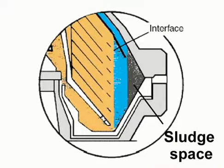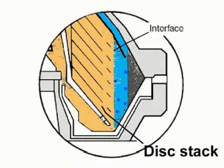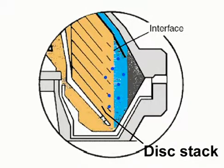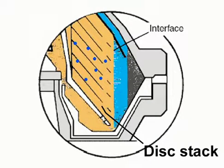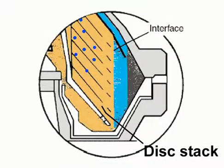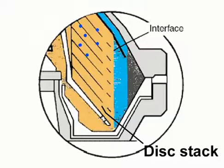When the sludge space is filled up and water approaches the disk stack, some droplets of the water start to escape with the cleaned oil. The small increase of the water content in the cleaned oil will be sensed and initiate a sludge discharge cycle.